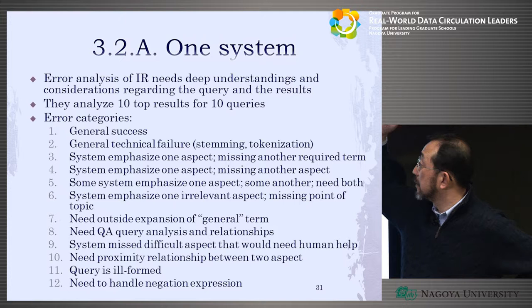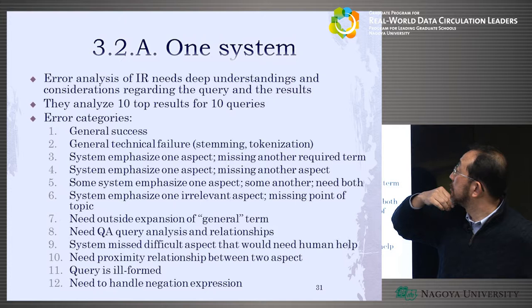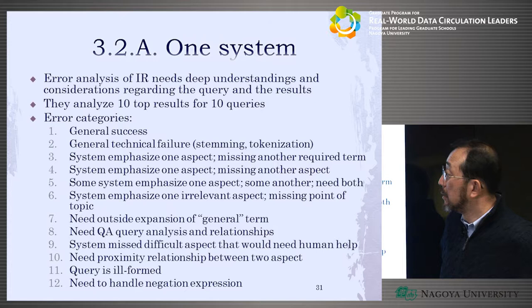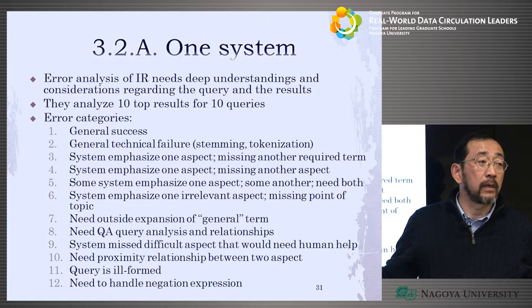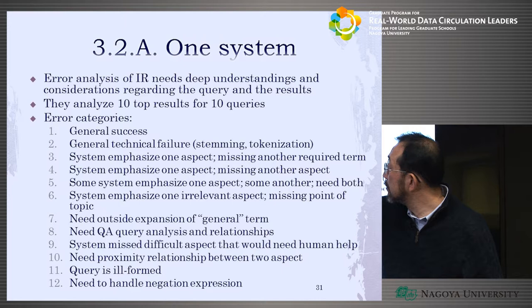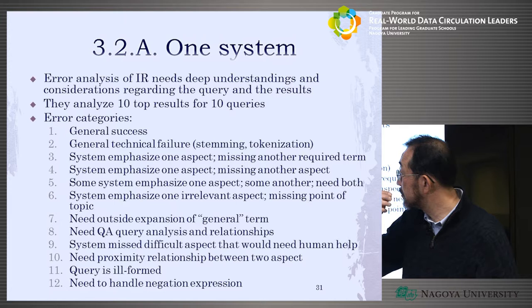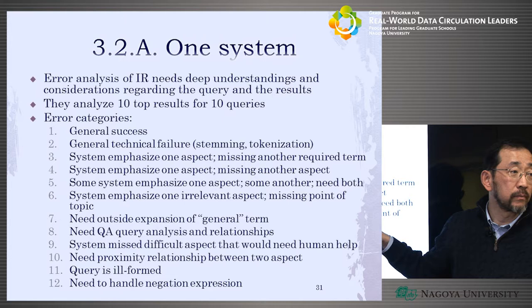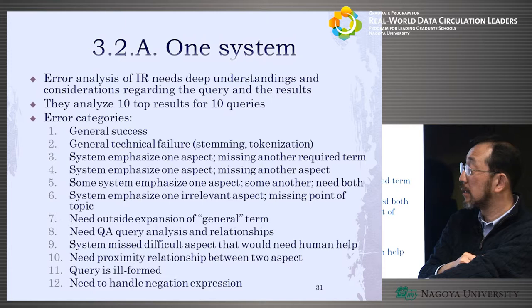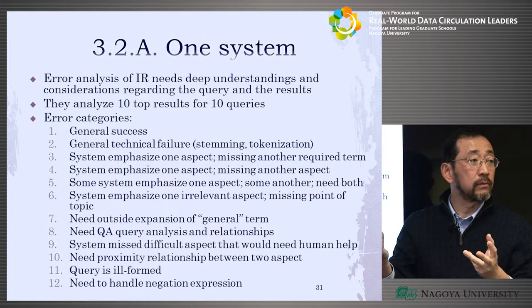This is the error analysis on information retrieval. It requires deep understanding and consideration regarding the query and the results, so it takes a long time. You have to read the top 10 results for 10 queries and find why mistakes were made. For example, a system might emphasize one aspect while missing another — if the query is 'kids' school,' the system might emphasize only 'school.'